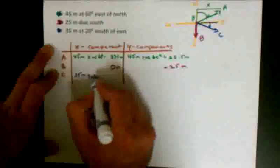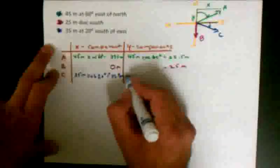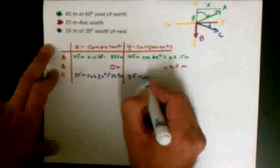So let's look at our third vector. Our third vector is 35 meters at 20 degrees south of east. I see my x component touches that. So I'm going to use cosine 20 degrees. And that gives me 32.9 meters, and it's positive because it's to the right. But in the y component, 35 meters sine 20 degrees gives me 12.0 meters. I'm going to make it negative, because it's pointed downward.